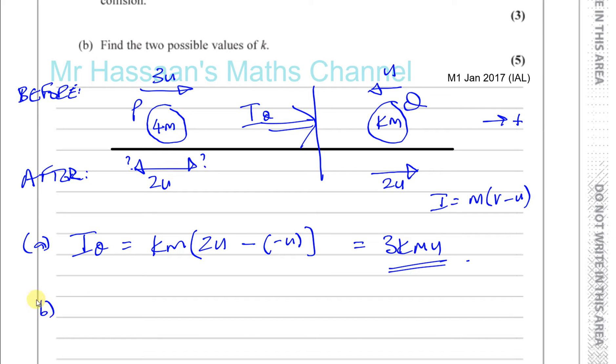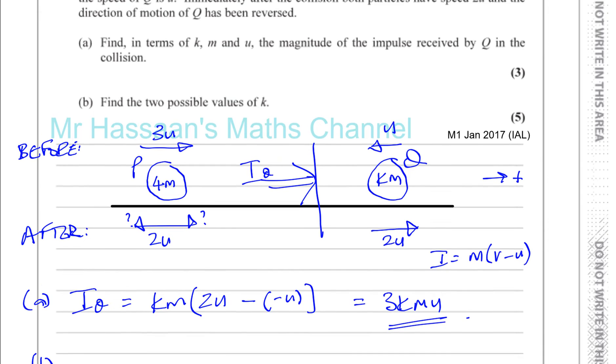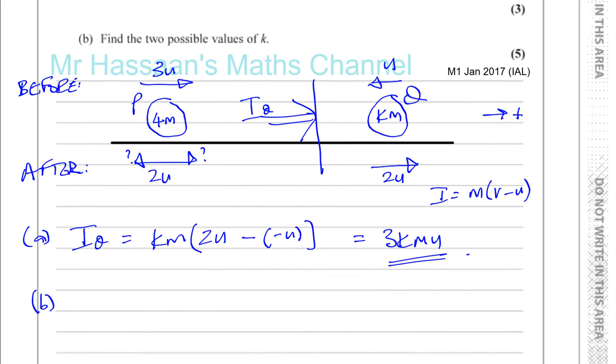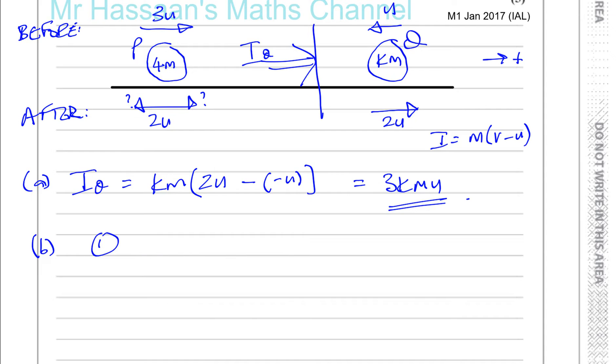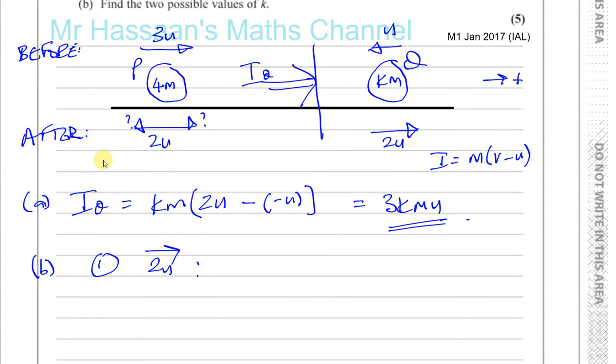Part B says find the two possible values of K. So there's two possible things that could happen to K. It could be going 2U in the same direction as it was before the collision. Here we can use the total momentum before and after, or we can use the fact that we know what the impulse is. I know what the magnitude of the impulse is, and for P, the impulse must be acting in this direction. Using the impulse is probably easier.